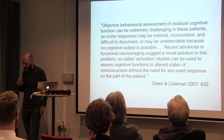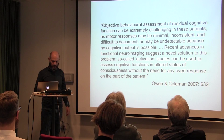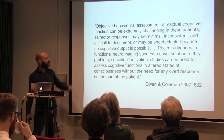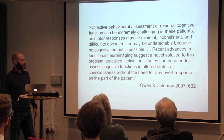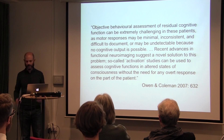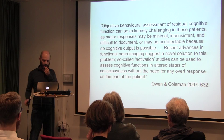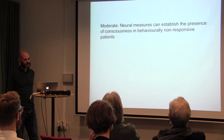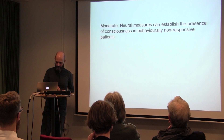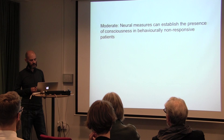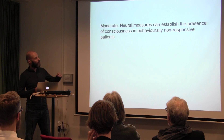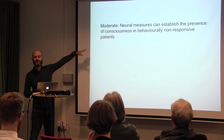That's the preamble for Owen and Coleman's use of fMRI and EEG to detect consciousness in these patients. They say functional neuroimaging suggests a novel solution to the problem of inconsistent, difficult-to-document behavioral responses: activation studies can assess cognitive function without the need for any overt behavioral response. Many people endorse what I call the 'moderate' claim — that neural measures can establish the presence of consciousness in behaviorally non-responsive patients — and Owen has built a second career on that claim.